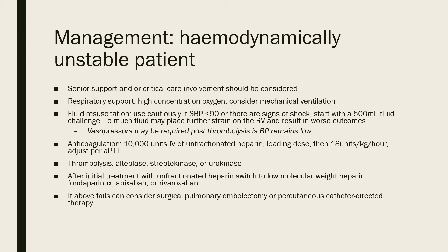Anticoagulation: 10,000 units of unfractionated heparin IV loading dose, then 18 units/kg/hour adjusted per APTT. Thrombolysis agents include alteplase, streptokinase, or urokinase. After initial treatment with unfractionated heparin, switch to low molecular weight heparin, apixaban, or rivaroxaban. If anticoagulation and thrombolysis fail, consider surgical pulmonary embolectomy or percutaneous catheter-directed therapy, where the anticoagulant is delivered directly at the site of the clot.